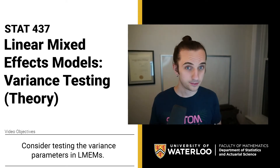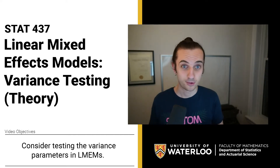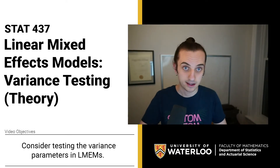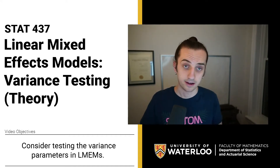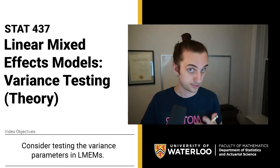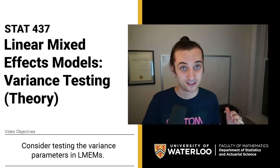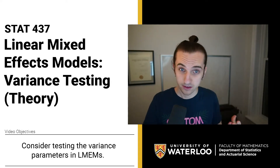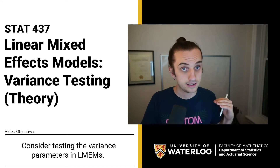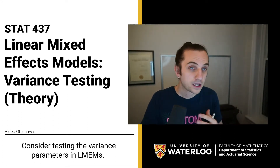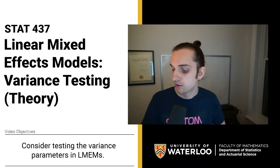This is something we need to watch out for in these models because we're quite interested in testing variance parameters — there's a meaningful question to be asked there — but we have to be careful because the asymptotic distribution is not going to behave the way we're used to when we use likelihood theory. I'm going to walk through what this is without all the mathematical details, but I'll try to motivate what's happening and then discuss how we go about remedying this.